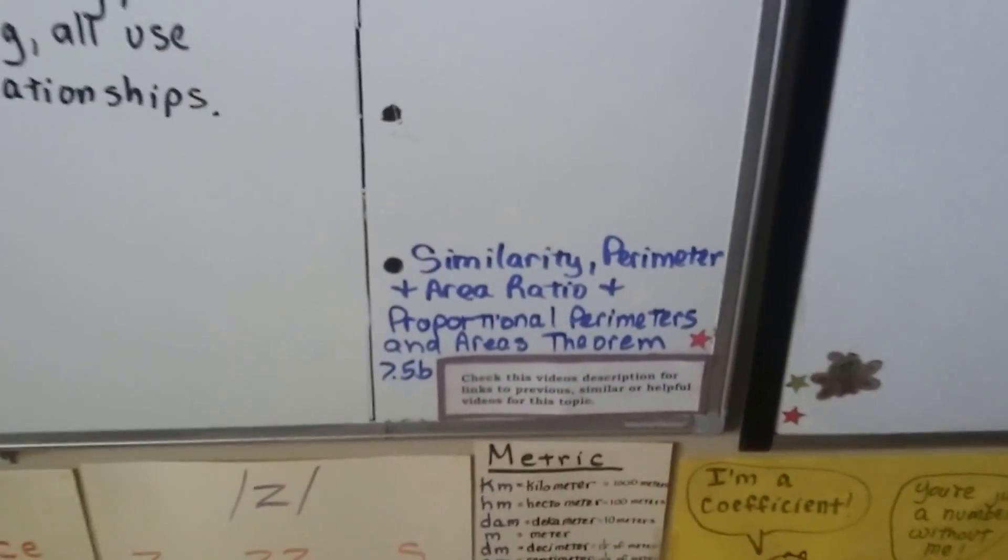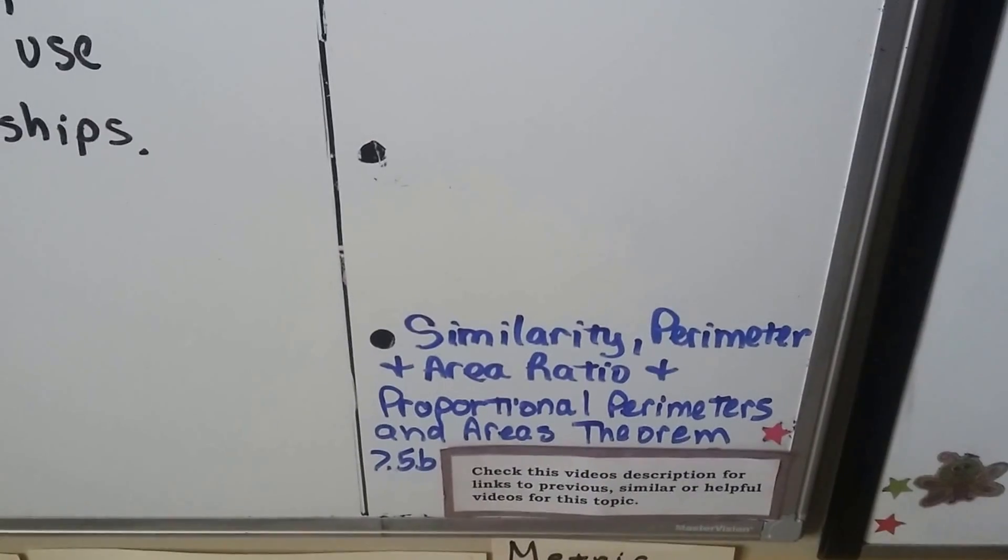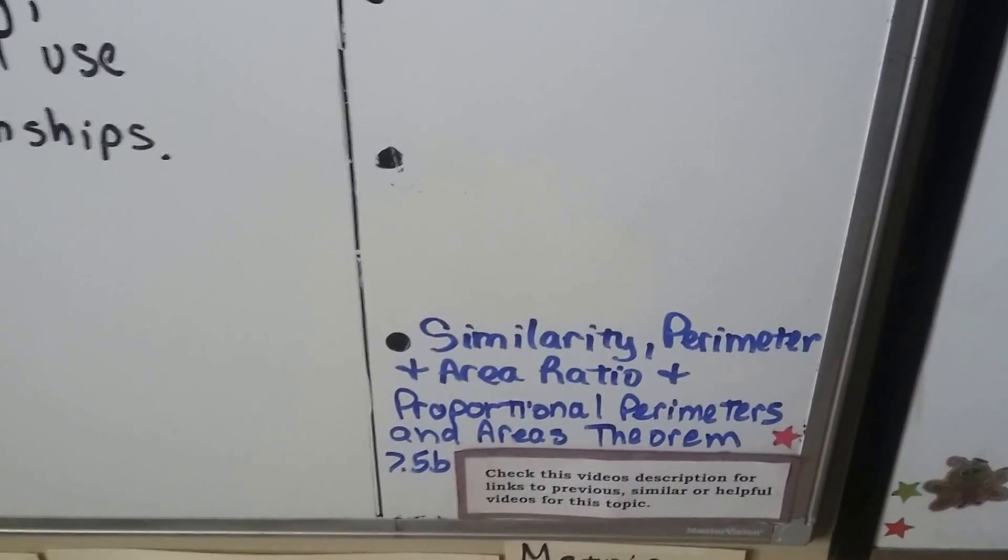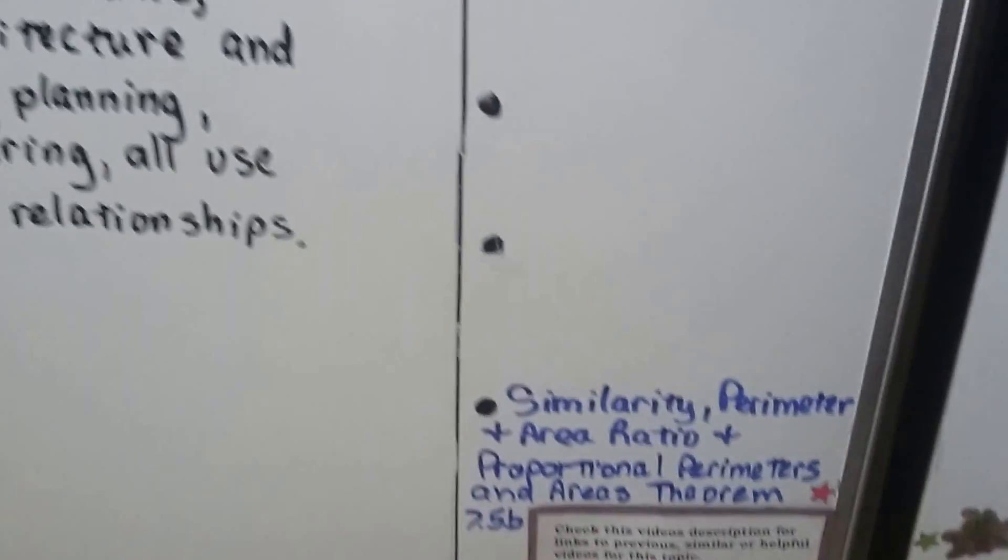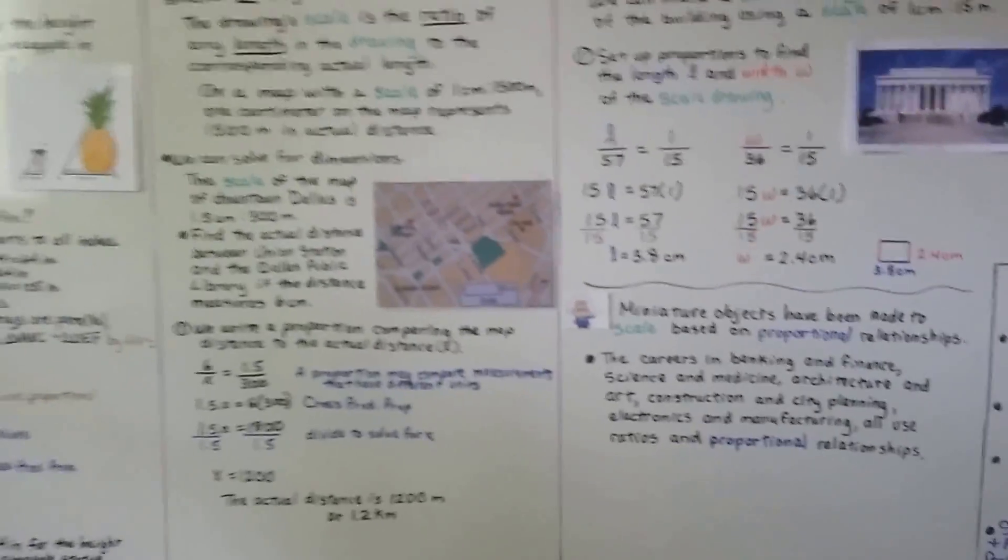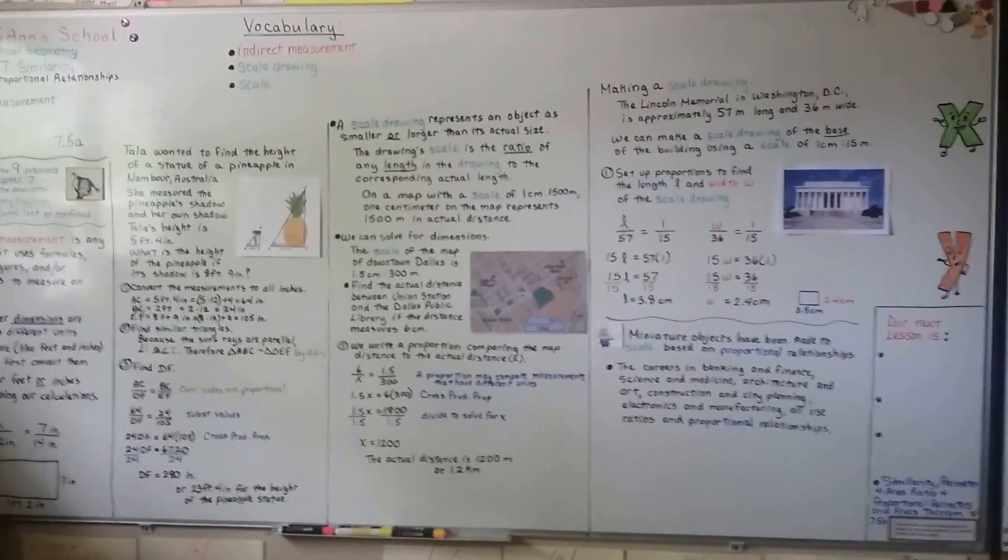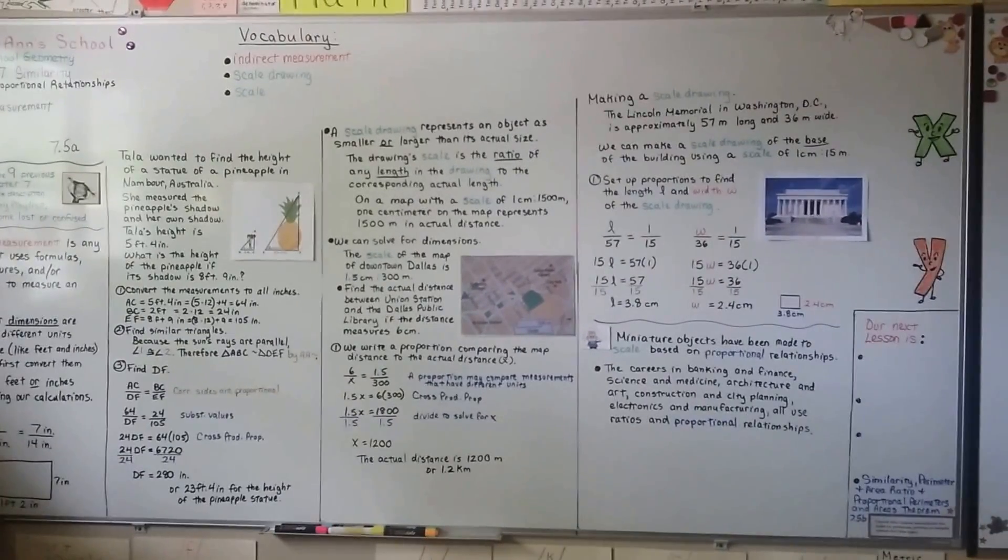Our next video is similarity perimeter and area ratio and the proportional perimeters and area ratios theorem before we move on to 7.6. So I hope you understand about the proportional relationships now and I'll see you next time.